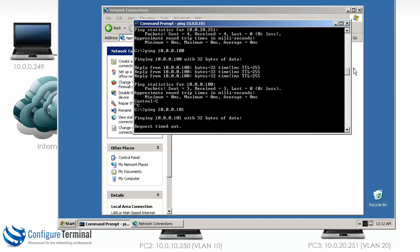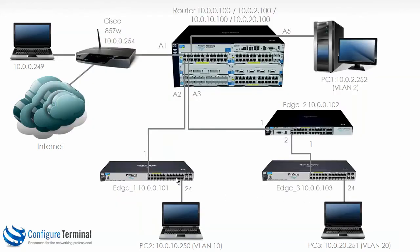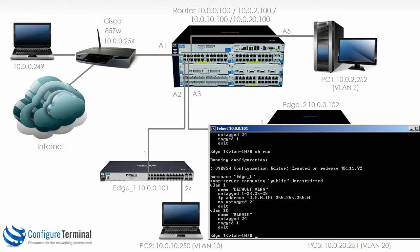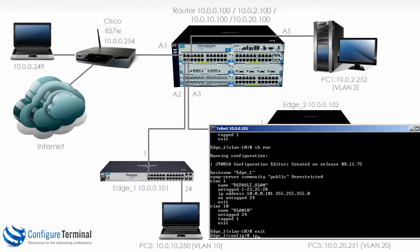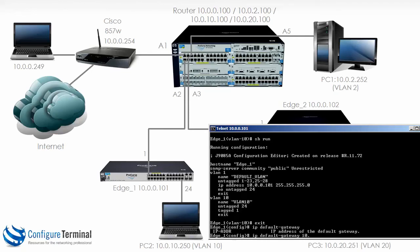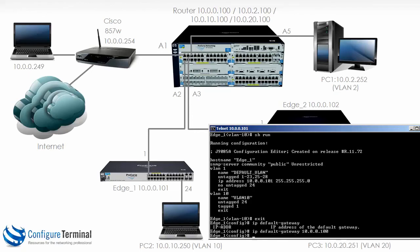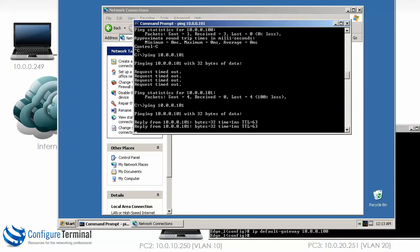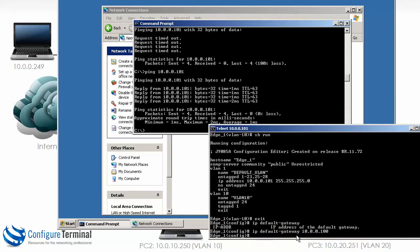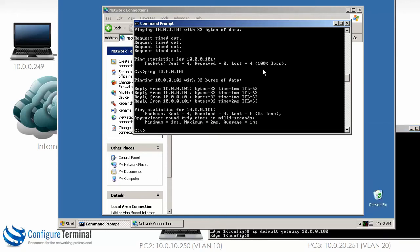Notice it cannot get to 10.0.0.101, so it cannot connect to that switch. This is something that often bites people — just because your PC can send traffic to the router and the router can send it to the switch doesn't mean it's going to work. The switch needs to know how to send traffic back. Did we configure a default gateway on that switch? The answer is no. So we need to type the command IP default gateway and specify the default gateway for edge 1, which is our HP router. Now the ping succeeds because edge 1 has a default gateway.